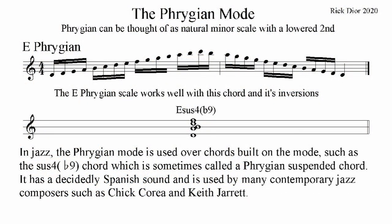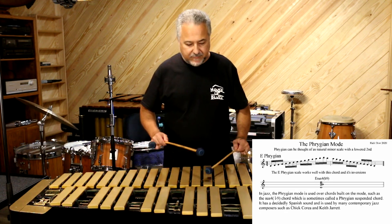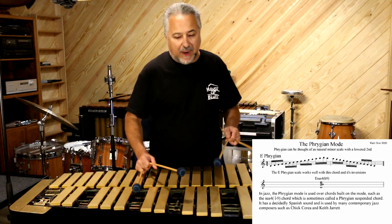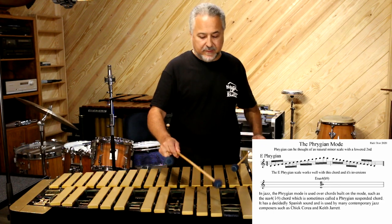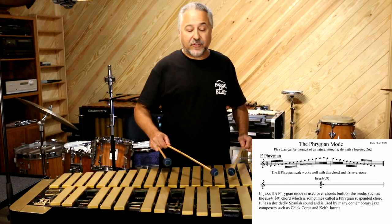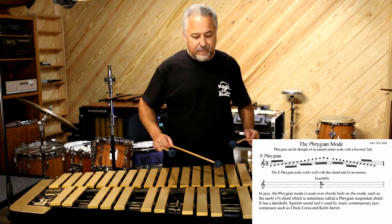The next mode is Phrygian. It's a little less common, but used by lots of contemporary jazz composers — especially Chick Corea and Keith Jarrett. A Phrygian mode is a minor scale with a flat two. So if you play E minor, which has an F sharp, you just flat that — the F sharp becomes an F — and then you have Phrygian.